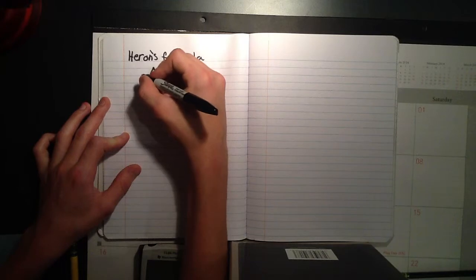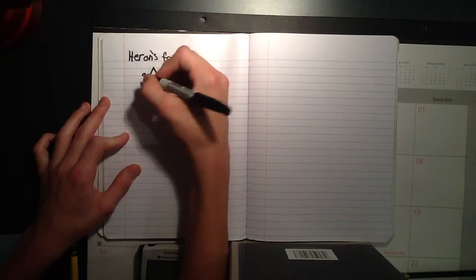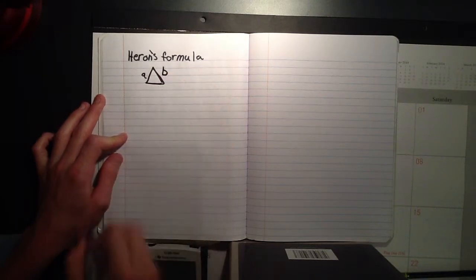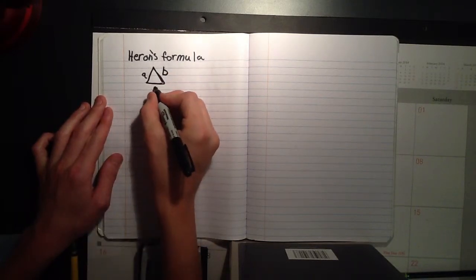So, let's say this is A. This side will be A, this side will be B, and this side will be C.